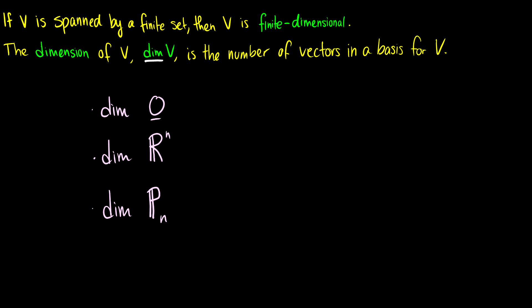For instance, if we take the dimension of the zero space, it doesn't have any vectors in it, so it would be zero. What about Rn? How many vectors do we need in a basis for Rn? We need n vectors. So if we have R2, we need two vectors to form a basis.